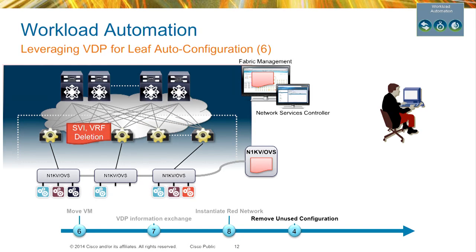The best part is, as I mentioned, when the red workload is no longer there, the configuration gets removed. If there were two workloads — red and blue — and you had to do cleanup manually, you'd likely make mistakes: either not removing the full configuration, or accidentally taking out the wrong VLAN, causing your blue workload — a critical workload — to go away.